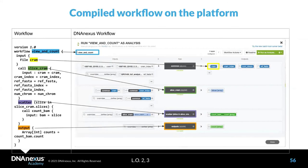Mapping it all together between the WDL workflow and the DNAnexus native workflow: the compiled workflow name corresponds to the WDL workflow name. The input file maps to the input section. The slice_cram function maps to its compiled stage, and the scatter function maps to the scatter stage. The output maps accordingly. This is how the WDL workflow translates to the DNAnexus native workflow.